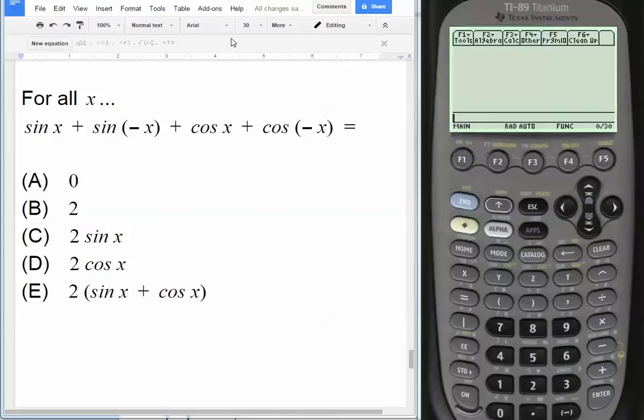This question, these two questions actually, I'm showing you the first one right now, across the nation, 56% of kids got this first question right, and only 51% of students got the next question, so only about half the students for each one. Both of these can be done on the TI-89 with literally no math. All you do is input the equation, push enter, and the calculator will simplify it for you.